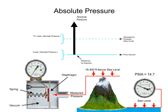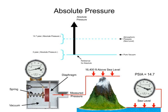As the diaphragm element bends towards the side with the lowest pressure, it pushes on a spring that is mechanically linked to the gauge pointer and indicates the pressure value.